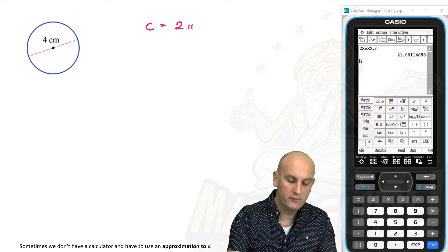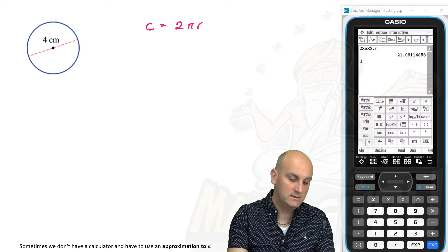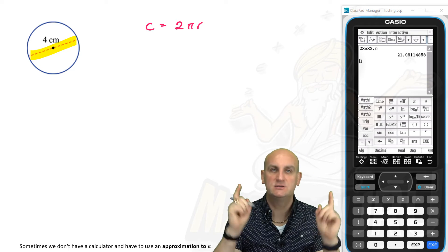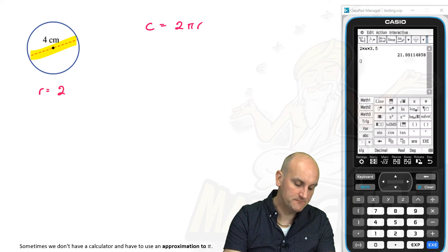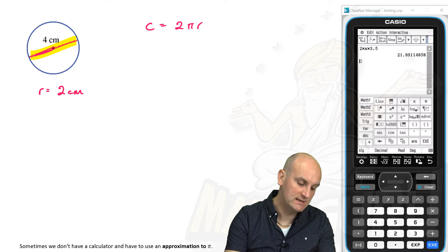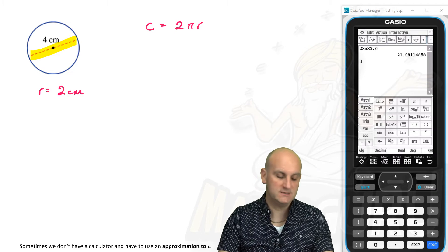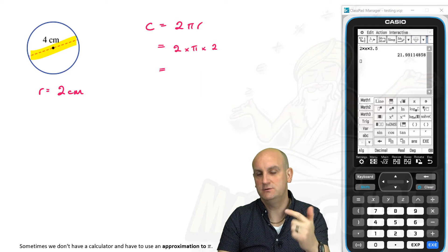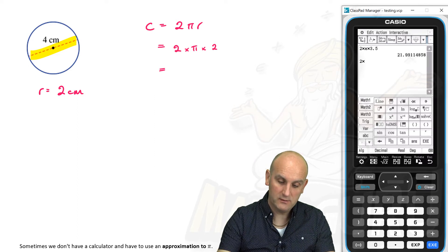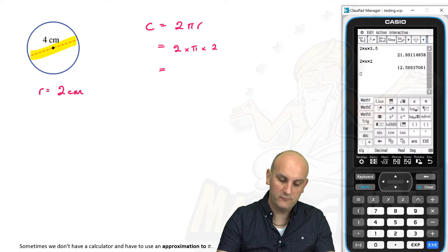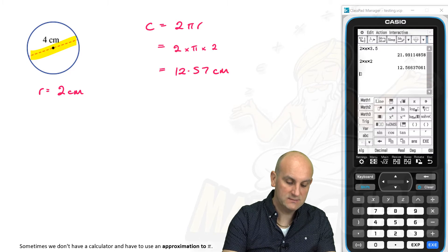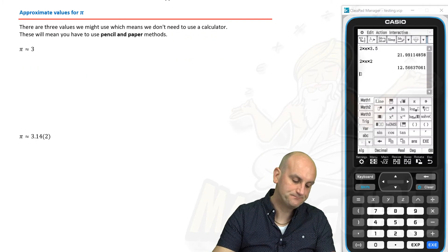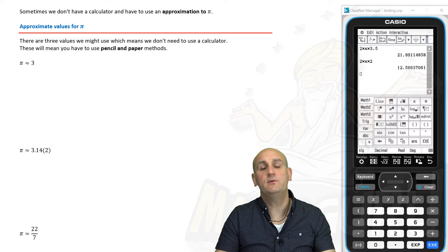Circumference is equal to 2πr — I always use that formula. Here's the trick though: is that measurement a radius? No, it's a diameter. Bearing in mind that the diameter is twice the length of the radius, my radius in this situation would be 2 centimetres. So that becomes 2 times pi times 2, which gives me a wonderful value of 12.57 centimetres. This is a distance around the edge, not an area, so it's just centimetres — not centimetres squared.